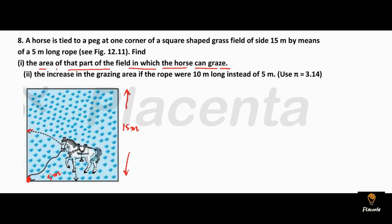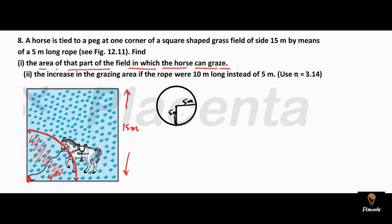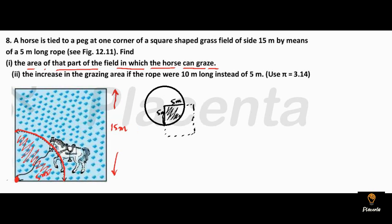The horse can graze inside the curve that forms from its position — the grass within that area it can eat, and the grass outside it cannot reach because it is tied with this rope. So a sector is being formed here. In a rough figure: this is our circle, with two lines each of 5 meters forming the sector. The horse can graze that much area. The angle here will be 90 degrees because this is a square.